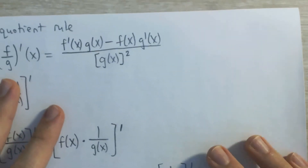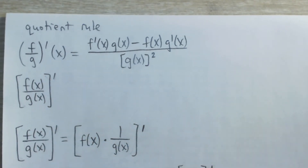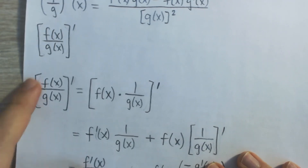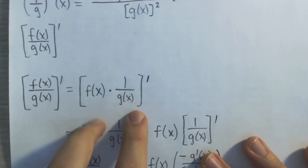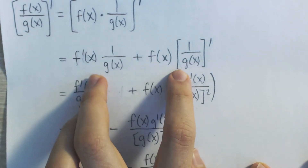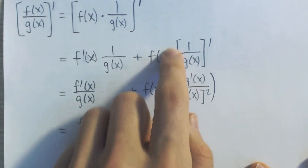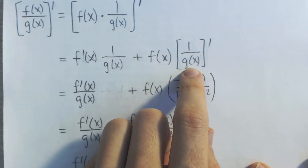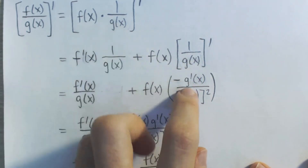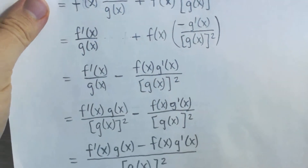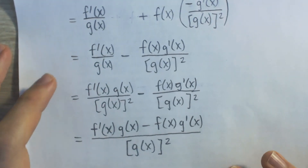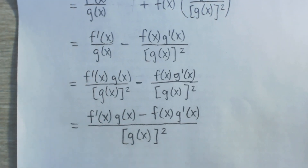And that is indeed our quotient rule for derivatives, so that's our proof. We broke up f of x over g of x and rewrote it as a product of two things, then used the product rule for derivatives to evaluate that derivative, and used the reciprocal rule for derivatives to evaluate the derivative of 1 over g of x. Then we did a little bit of multiplying, found a common denominator, subtracted fractions, and ended up with our final answer.